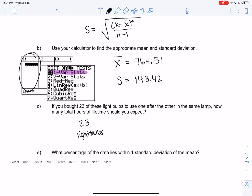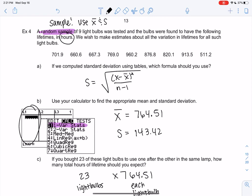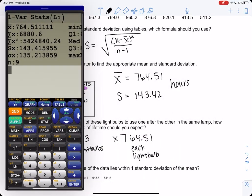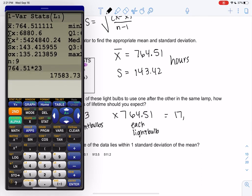So we have 23 light bulbs, and I expect each individual light bulb to last about 764.51 on average. Some will be a little longer, some will be a little shorter, but on average 764.51 in hours, so these are both in hours. So I can just go ahead and multiply.